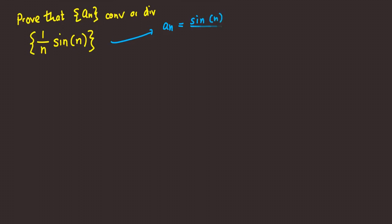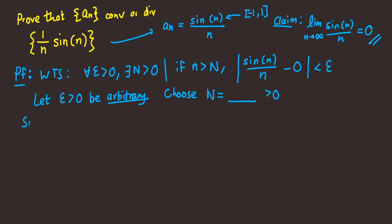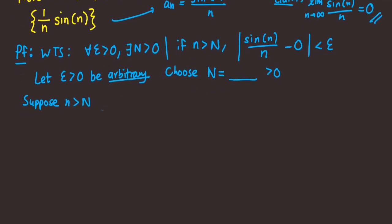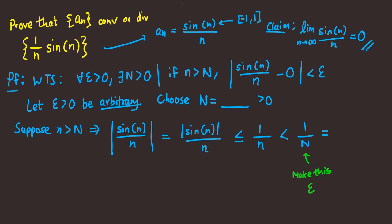For this example, we use the fact that sin(n) is bounded between -1 and 1, so A_n is either 1/n or -1/n; either way it goes to 0. The proof is similar to before: pick an arbitrary epsilon and choose a blank N. Since 1 is the highest possible value of sine, we bound above by 1 and then make it less than epsilon, so we choose N = 1/ε.